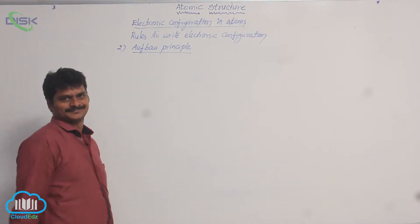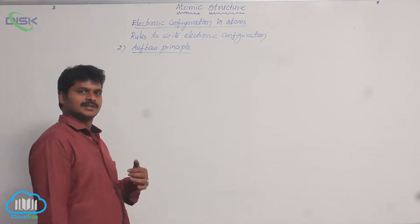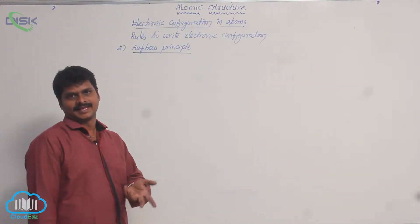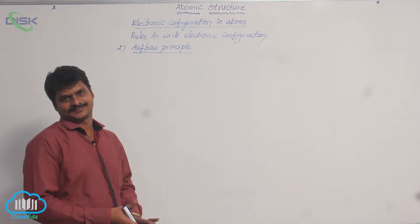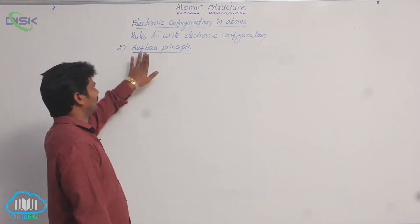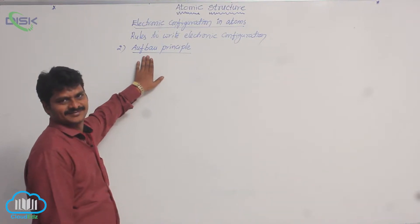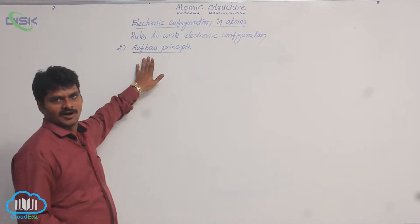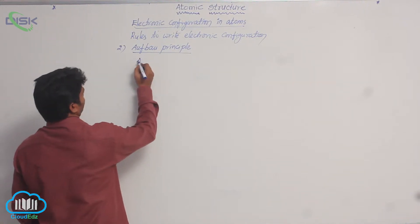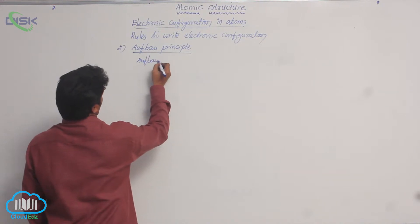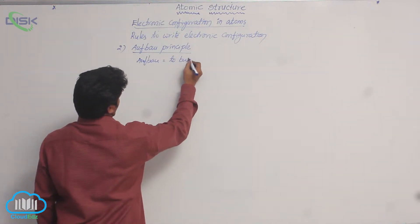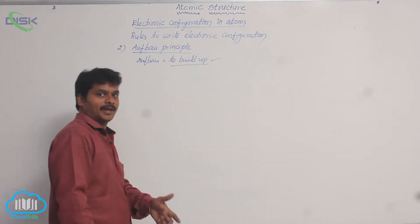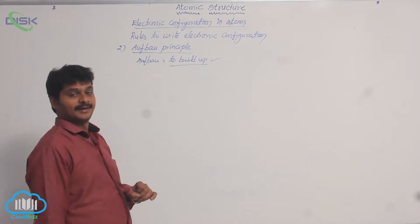Let's see the second rule — the Aufbau principle. First I had discussed Pauli's exclusion principle. There, Pauli is the name of a scientist. Here, Aufbau is not the name of a scientist. Aufbau is a word taken from the Greek language. Aufbau means 'to build up' — to build up the configuration. This is the necessary principle.